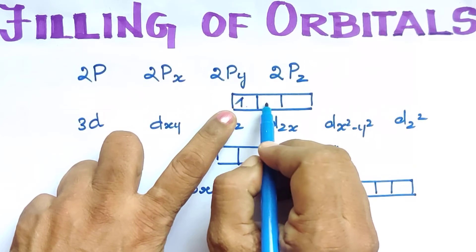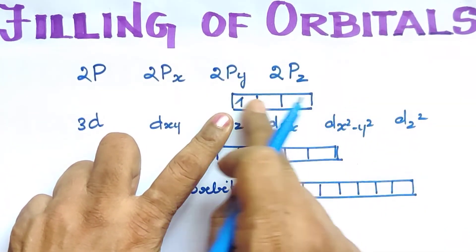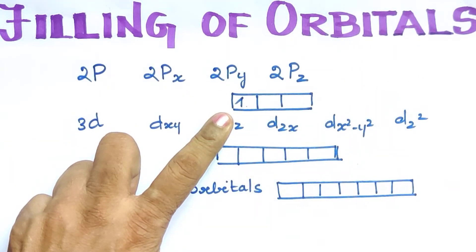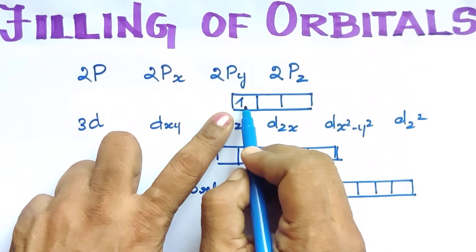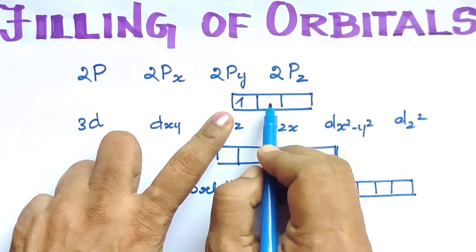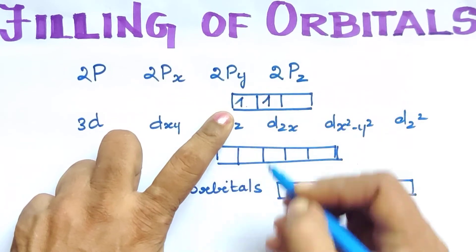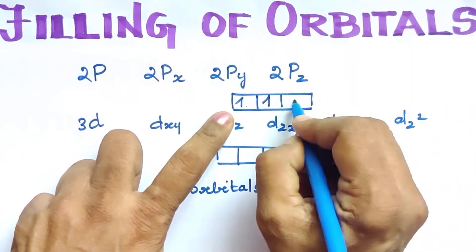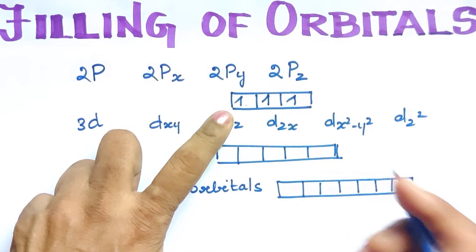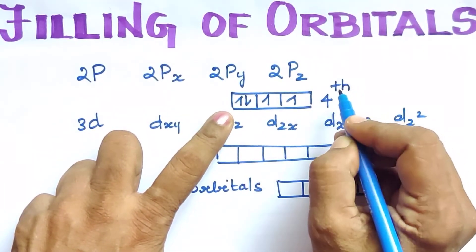However, Hund's Rule says that in degenerate orbitals, electrons must fill each orbital singly first before pairing begins. So for P orbitals with 3 boxes: 1 electron goes in the first box, 2 electrons go one each in the first two boxes, 3 electrons go one each in all three boxes. Pairing only takes place at the 4th electron.